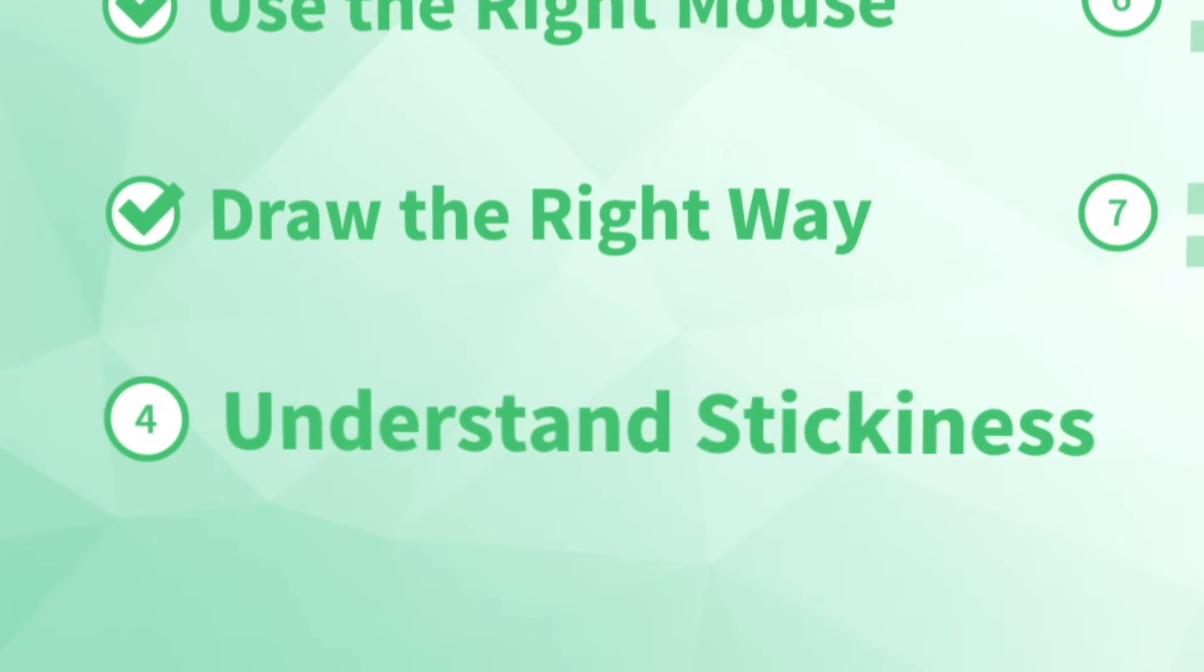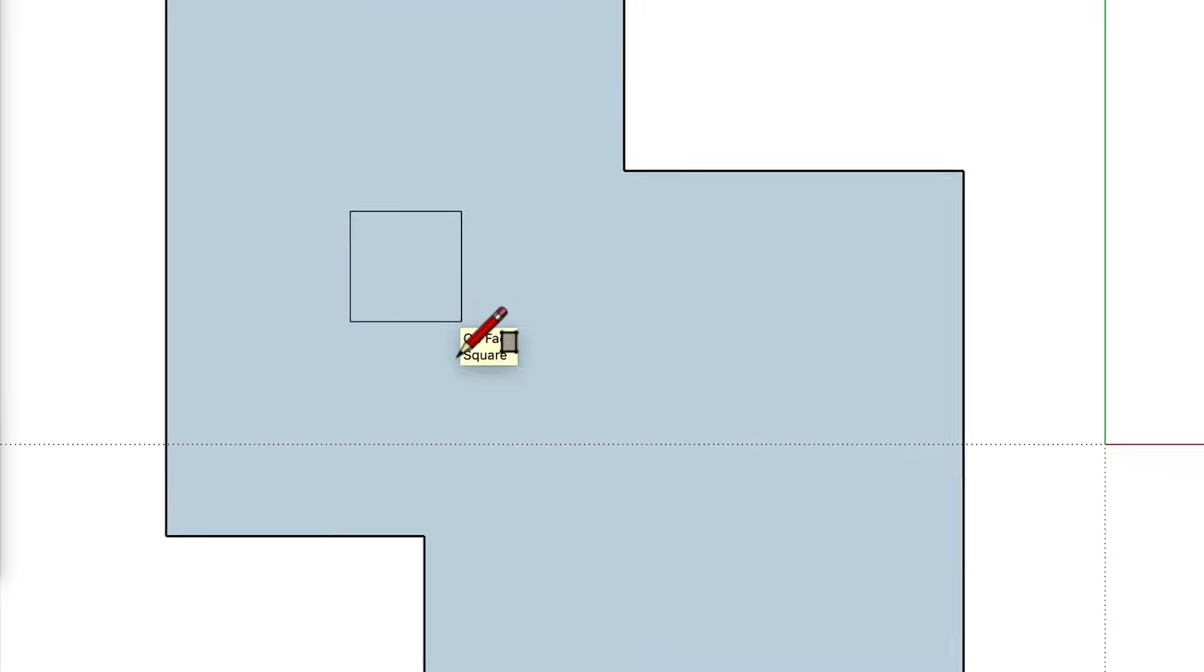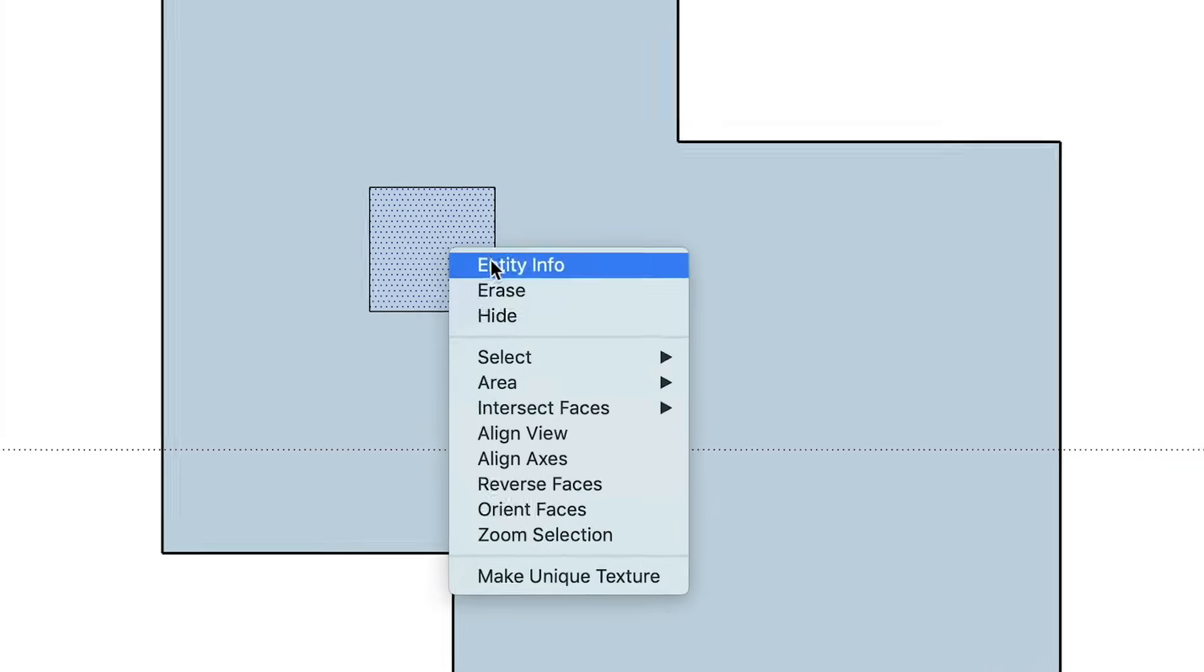Number four. Understand stickiness. In SketchUp, edges and endpoints stick to other edges and endpoints. This is a good thing. You can overlap shapes and edit them to create new ones. Try it. Practice overlapping geometry. Then use the eraser tool to delete edges you don't need. Or get rid of faces by right clicking on the face and picking the option for erase. In this way, stickiness is helpful for modeling quickly in SketchUp. But down the road, stickiness can also create the absolute most painful problems you'll ever encounter in SketchUp. Luckily, I've got you covered with the next tip.